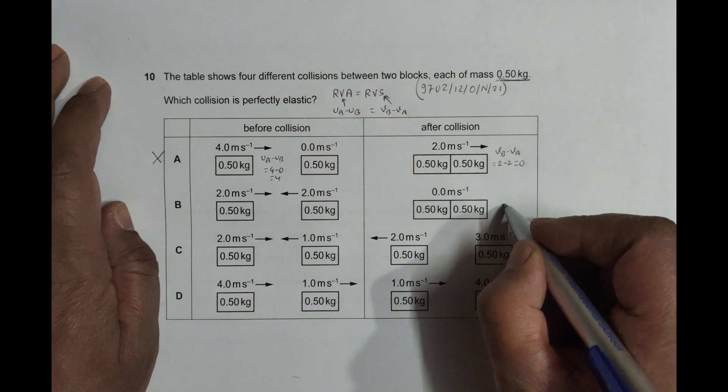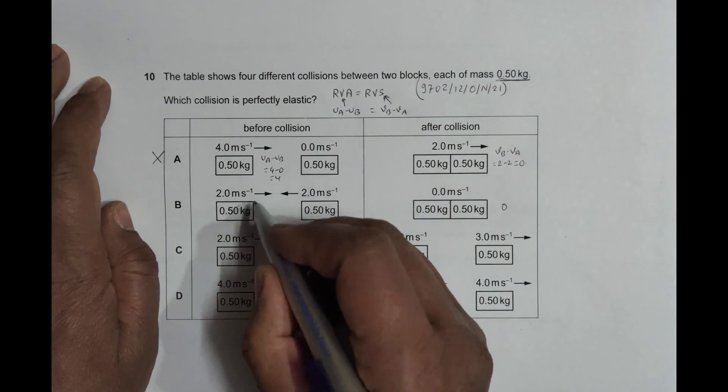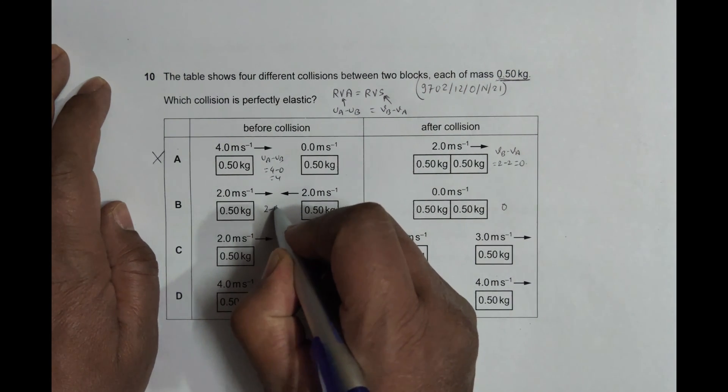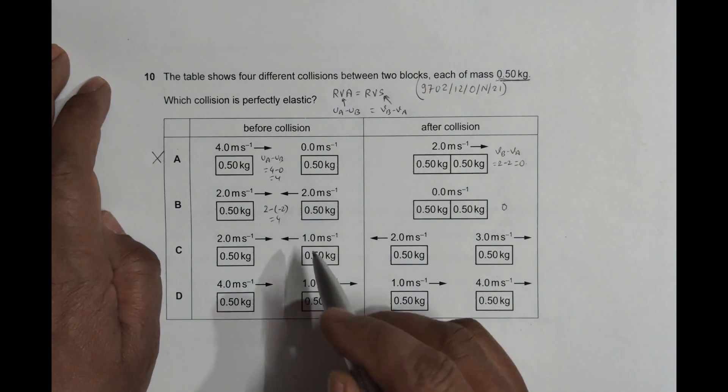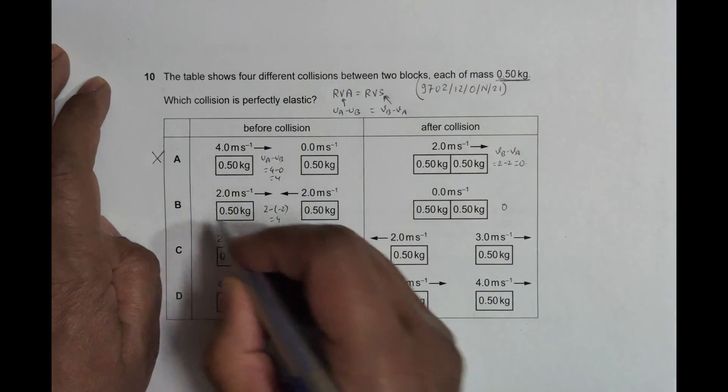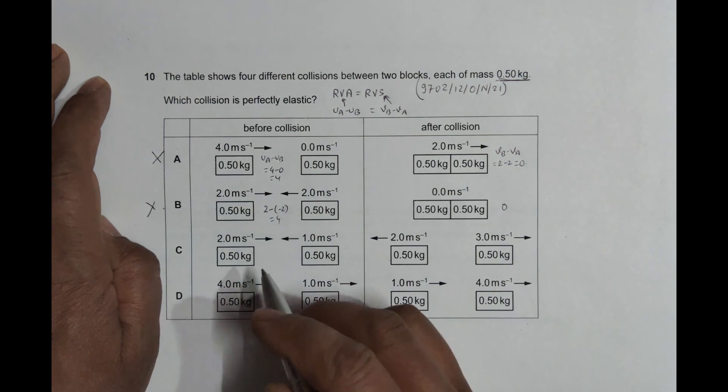In a similar way, here also it is 0, and here it is 2 minus negative 2, equal to 4 again. So that's why it is 4 and 0, this also does not qualify.